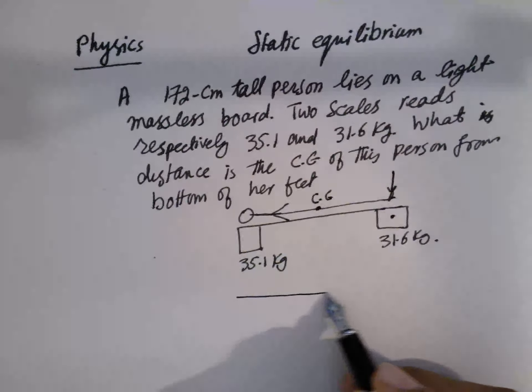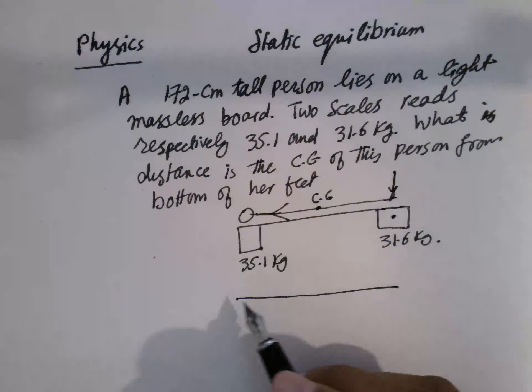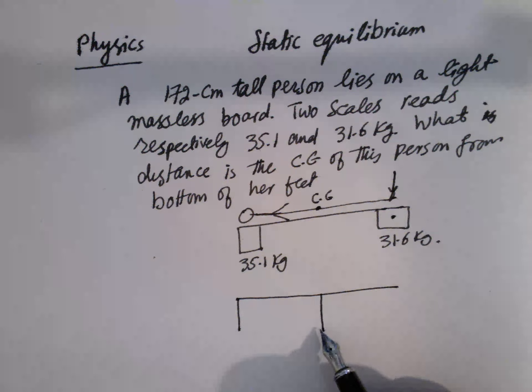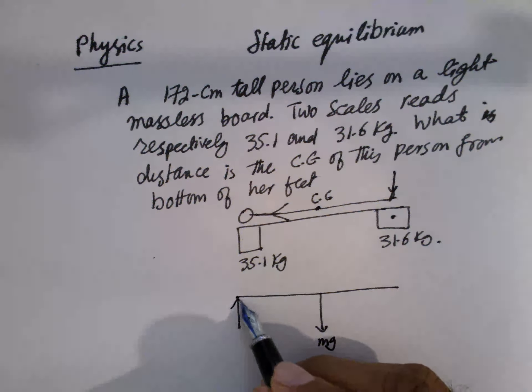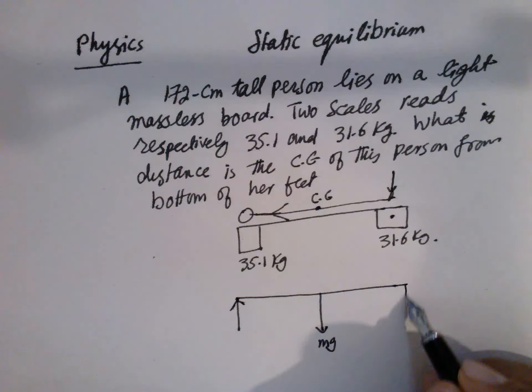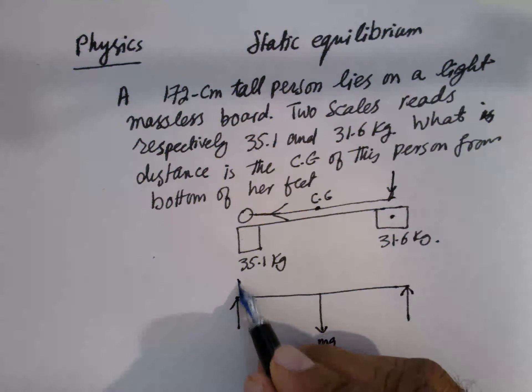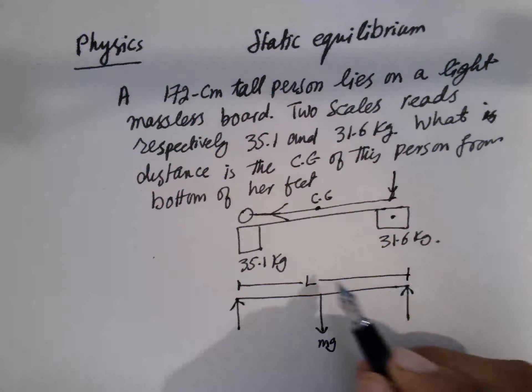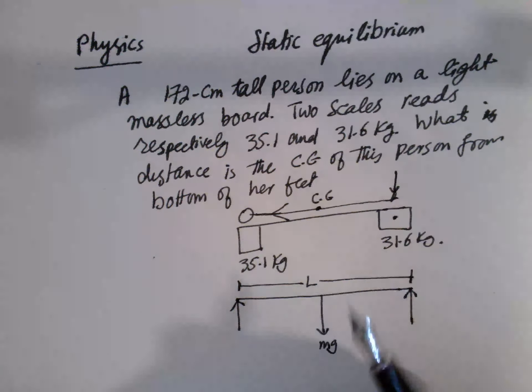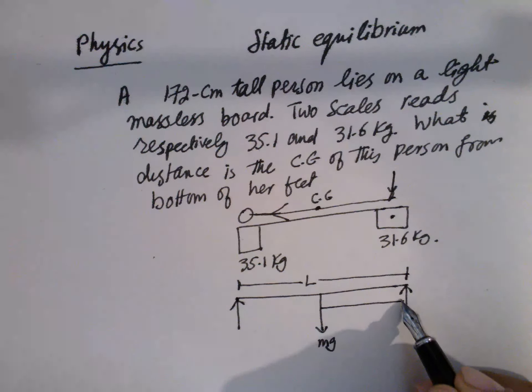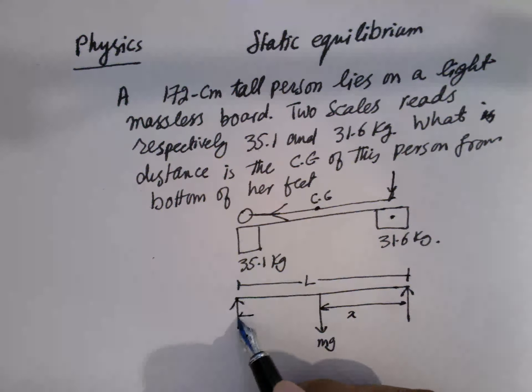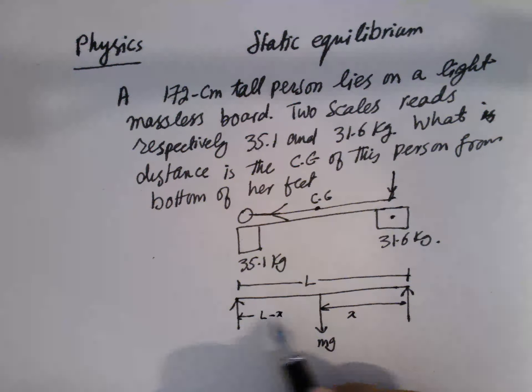So it's like this one. This is the person. This is the center of gravity. This is mg and this is pushing up and that is also pushing up. That length is equal to, the whole length is equal to L which is equal to 172. This we have to find, which is X, and this is equal to L minus X.